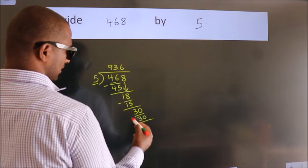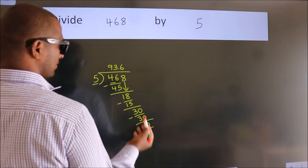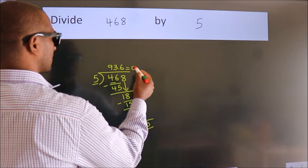Now we subtract. We get 0. We got remainder 0. So this is our quotient.